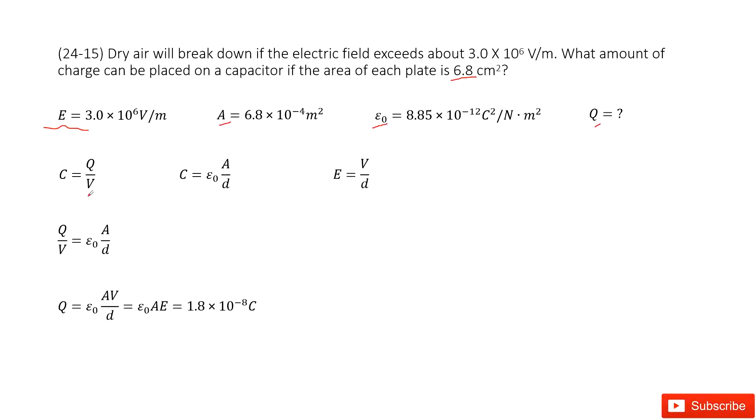So we can write the left hand side as Q over V, the right hand side as epsilon naught A over d. And then from this equation we can move the V to the right hand side and get the function for Q. Q is the charge, this is what we are interested in.